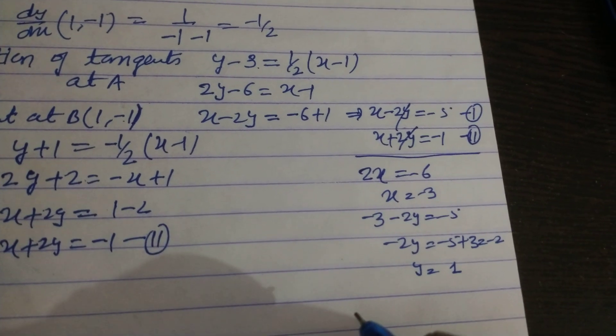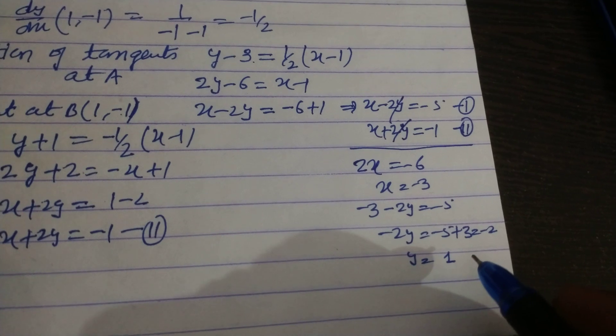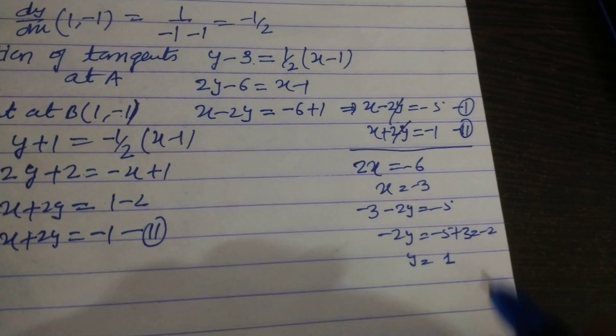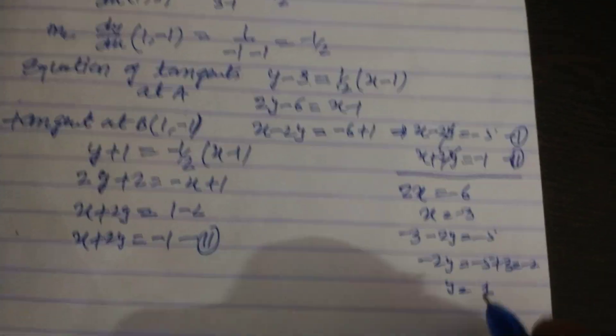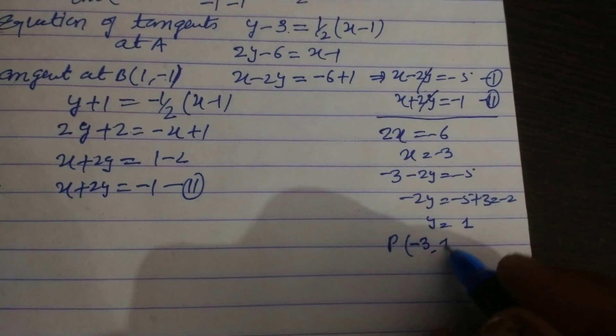And this is -2y = -5 + 3 = -2 and y = 1. So the intersection point P is, therefore P is (-3, 1).